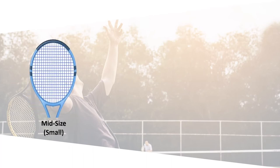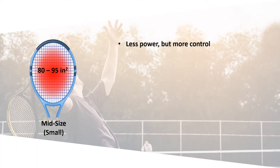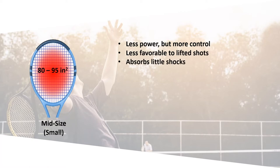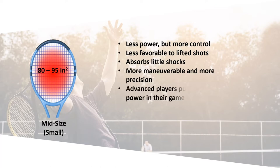Finally, the surface area of the small sweet spot usually varies between 80 and 95 square inches. Rackets with a small sweet spot decrease power while increasing ball control. They make lifted shots more difficult and absorb little shocks and vibrations, making the game more demanding for the player. On the other hand, they are very maneuverable and allow more precision in the player's game. They are recommended for advanced players who put little power in their game and seek precision, since the small sweet spot requires centering the ball well.